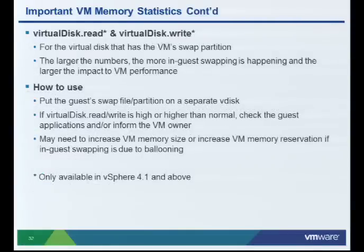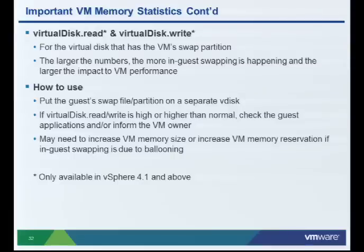To see a guest's page rate — one answer to the earlier question — I recommend virtual disk read and virtual disk write metrics. What you can actually do is put the guest's swap partition or page file on its own separate virtual disk, a separate VMDK. That way, any I/O activity to that disk is swap and page activity from the VM. This is a really cool way of being able to see what's happening inside the VM — is ballooning actually causing a performance problem or not? It's a little indirect, but it's a good way of understanding what's going on.